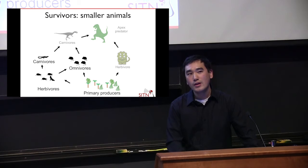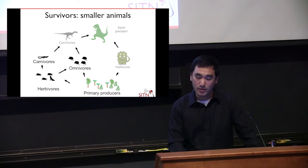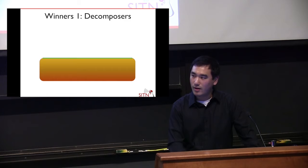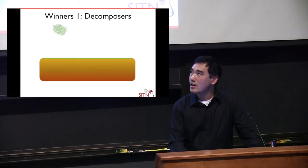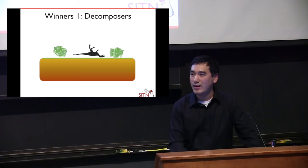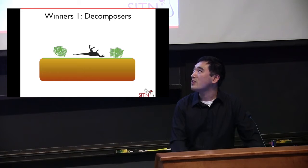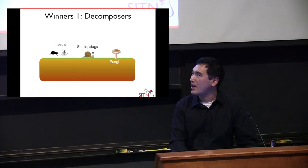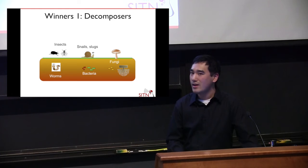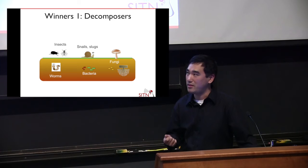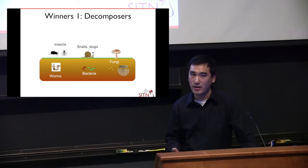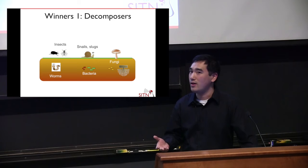Not everything was struggling for survival in this post-apocalyptic environment — some animals actually thrived. One class was the decomposers. When plants and animals die, all that organic matter has to go somewhere — it goes into insects, slugs, and fungi above the Earth, and worms, bacteria, and soil fungi below. These decomposers take dead or decaying organic matter and break it down as food for themselves. Because there's so much dead and decaying matter — all the plants and animals dying off — these species have abundant sources of food and do very well during these 10 years when most things are dying off.